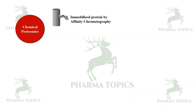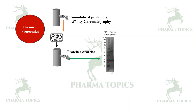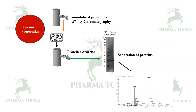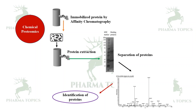There is also a new terminology called chemical proteomics. Here, proteins are first immobilized by affinity chromatography, then extracted and fractionated through chromatography. Separation of proteins is then analyzed through mass spectrometry, followed by protein identification. Some may be related to normal function, some to disease, or new biomarkers may be discovered. This is the role of proteomics in target identification, target discovery, and its validation.